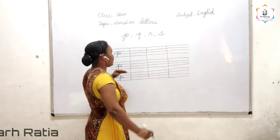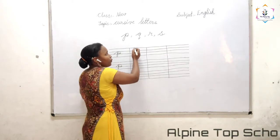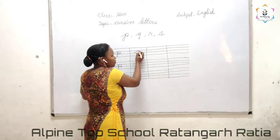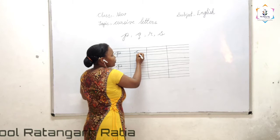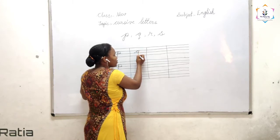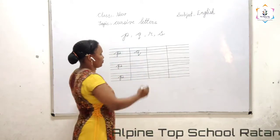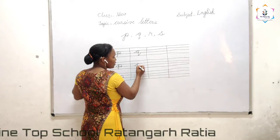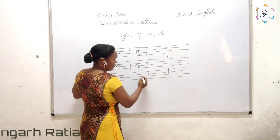Next is Q. We already learnt C. For writing Q, we have to make C first. Like this — this became C. Now to make Q, you go touch up, come down. Like this — this is Q. First make C, then go touch up, standing line, touch up. Q.